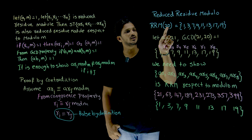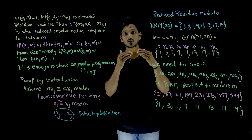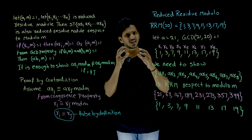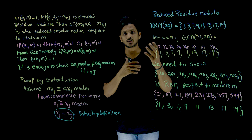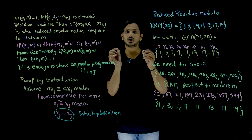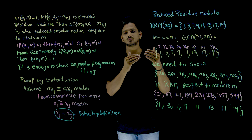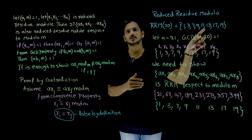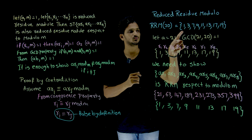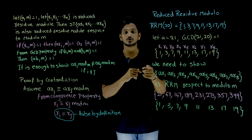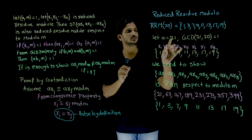This means GCD(1, 20) = 1, GCD(3, 20) = 1, GCD(7, 20) = 1 — this is what reduced residue modulo is. If you take any number such as 21 or 41, where GCD(21, 20) = 1, then when you perform the modulus operation with 20 you get one of the numbers in this set. For example, 21 mod 20 = 1, and 23 mod 20 = 3. That is what the reduced residue modulo set is.